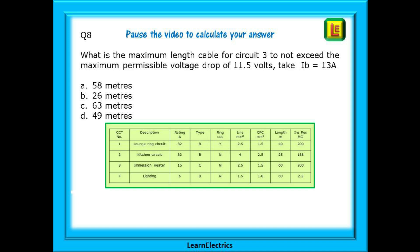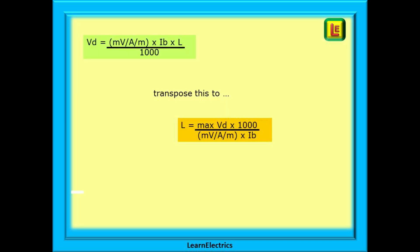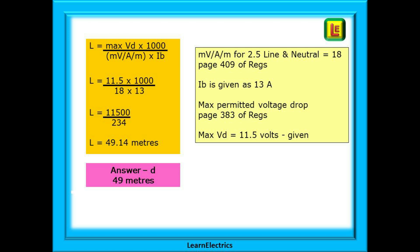Shown here at the top is the standard formula for voltage drop or VD. But we want the maximum length or L. We must therefore transpose the formula. If we jiggle the formula around we end up with the lower formula. Now it is just a case of putting the numbers into the calculator. The maximum permitted voltage drop or max VD is given as 11.5 volts. 1000 is the number to convert millivolts into volts. 18 is the millivolts per amp per meter number for 2.5 millimeter conductors which is found on page 409 of the regs. And we've been told to use 13 amps as IB. Calculate these through and our answer is 49.14 meters. We can round this to 49 meters and choose answer D.